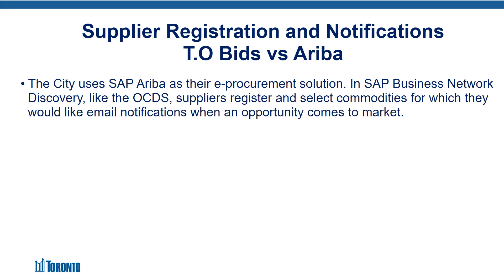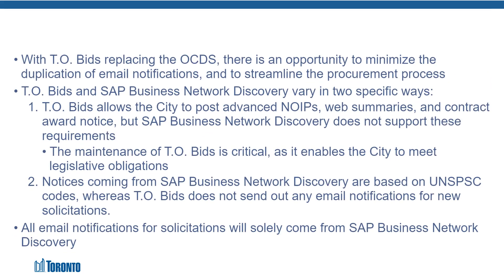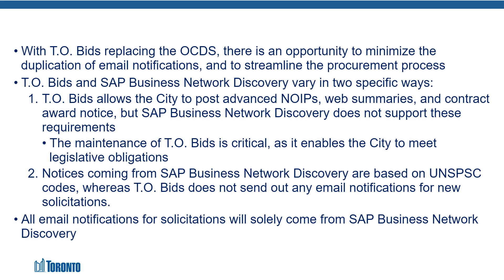With the introduction of SAP Ariba as the City's chosen e-bidding solution in 2019, use of the OCDS began to change. Suppliers were required to register on SAP Ariba and could obtain the solicitation documents for free. Suppliers who were registered on both the OCDS and SAP Ariba would receive duplicated email notifications from both the OCDS and SAP Ariba, but would no longer have to pay for solicitation documents on the OCDS. With the OCDS running on an older platform, scheduled for decommissioning by the end of January 2024, it was important to create a replacement that worked well with SAP Ariba and could continue to provide our suppliers with the OCDS's key features.